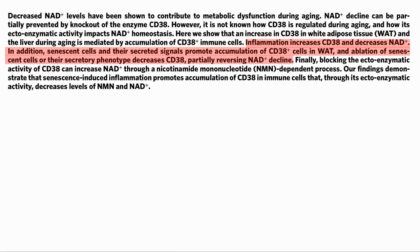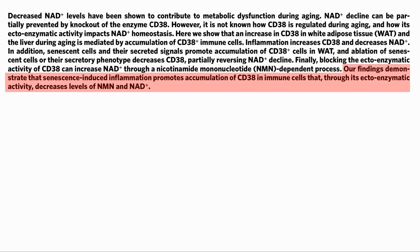Inflammation increases the amount of CD38 and decreases NAD. This increase in senescent cells and the secreted signals from them, called SASP, promotes CD38 cells in fat tissue. Removing the senescent cells or the SASP decreases CD38 and helps boost NAD. Inhibiting the activity of CD38 outside the cell can increase NAD+ through NMN-dependent processes. These findings demonstrate that senescence-induced inflammation promotes an accumulation of CD38 in immune cells that, through activities outside the cell, decrease NAD and NMN.